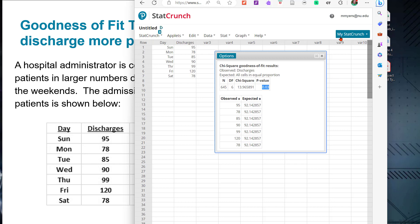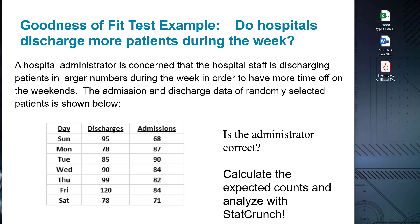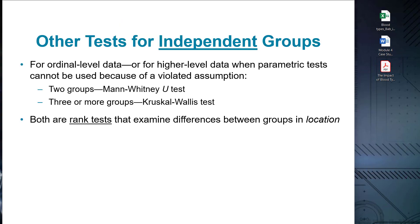When dealing with independent groups, non-parametric tests provide robust alternatives that do not rely on specific distributional assumptions. These tests are particularly useful when the data is ordinal, skewed, or when sample sizes are small. Let's look into two widely used non-parametric tests for independent groups: the Mann-Whitney-U test and the Kruskal-Wallis test. Both use ordinal-level data.